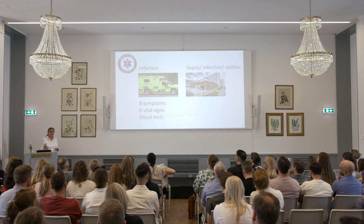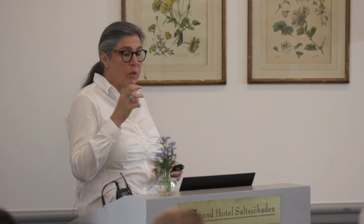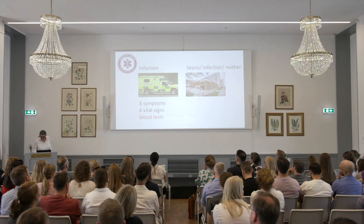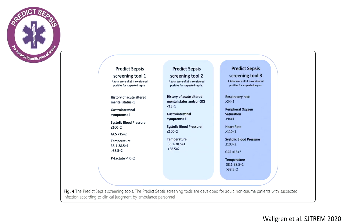The PREDICT-SEPSIS study: we included patients in the ambulance with infection according to clinical judgment by ambulance personnel, and also a group without infection. We registered symptoms, vital signs, and took blood tests. Outcome measures were infection with and without sepsis, and neither. Our results ended with three sepsis screening tools — not validated, but there. What's striking is that they're fairly simple: history of altered mental status, gastrointestinal symptoms, systolic blood pressure below 100, altered mental status measured as GCS, temperature, and lactate.